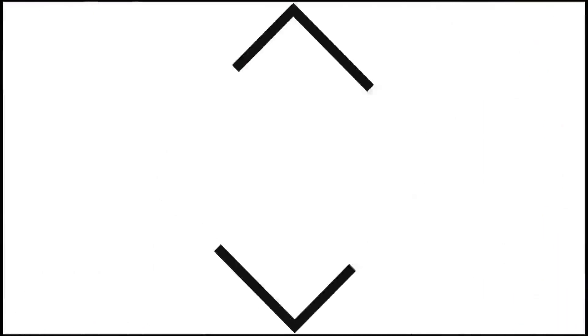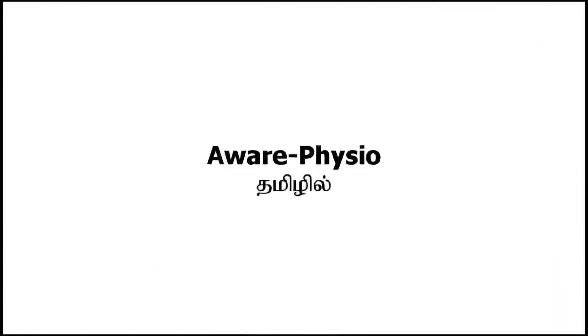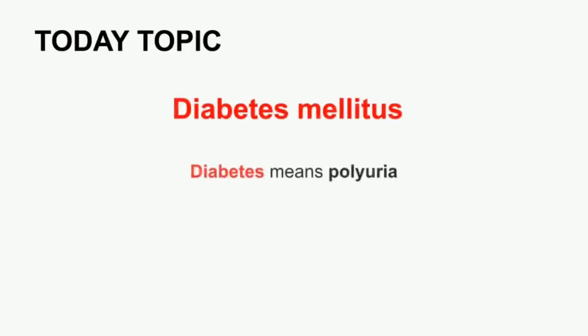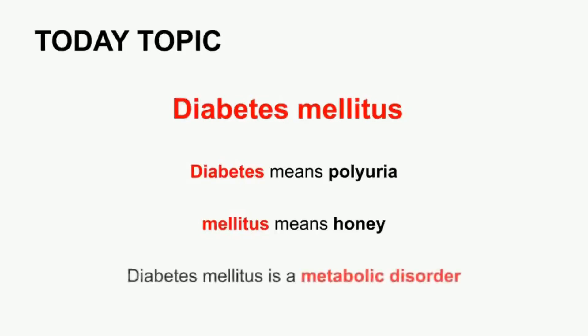Hi, hello friends, welcome to our physio. Now let's talk about the topic of diabetes mellitus. What is diabetes? Polyuria is called polyuria, and mellitus means honey in the urine, which contains sugar — it is sweet. That is diabetes mellitus.